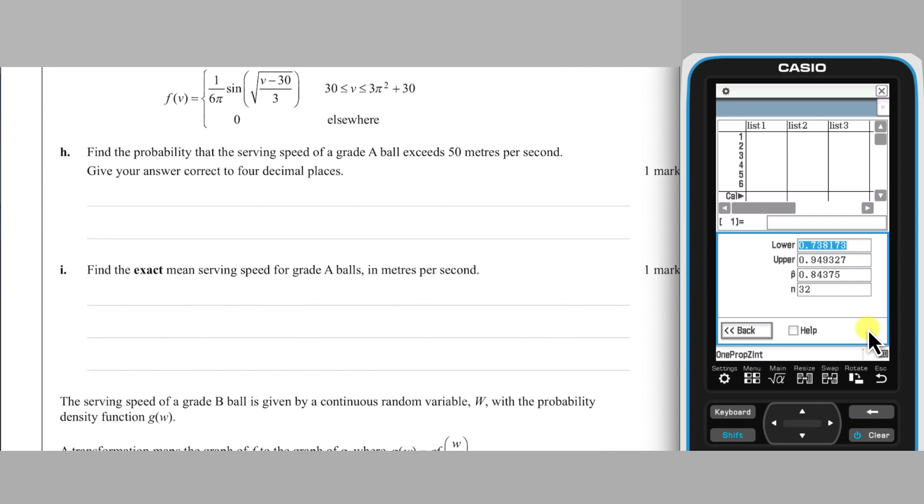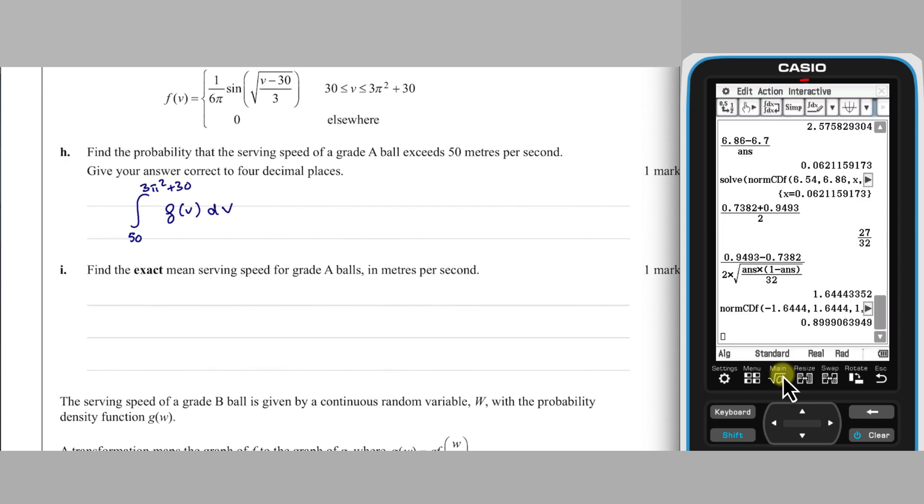For part H, we are introduced to a probability density function F for a continuous random variable V, the serving speed of a grade A tennis ball. The probability of a speed being greater than 50 metres per second can be found by calculating the definite integral of F from 50 to its upper bound of 3 pi squared plus 30. Given that the answer is required to four decimal places, I'm going to ask my classpad for a numerical calculation rather than an exact one.